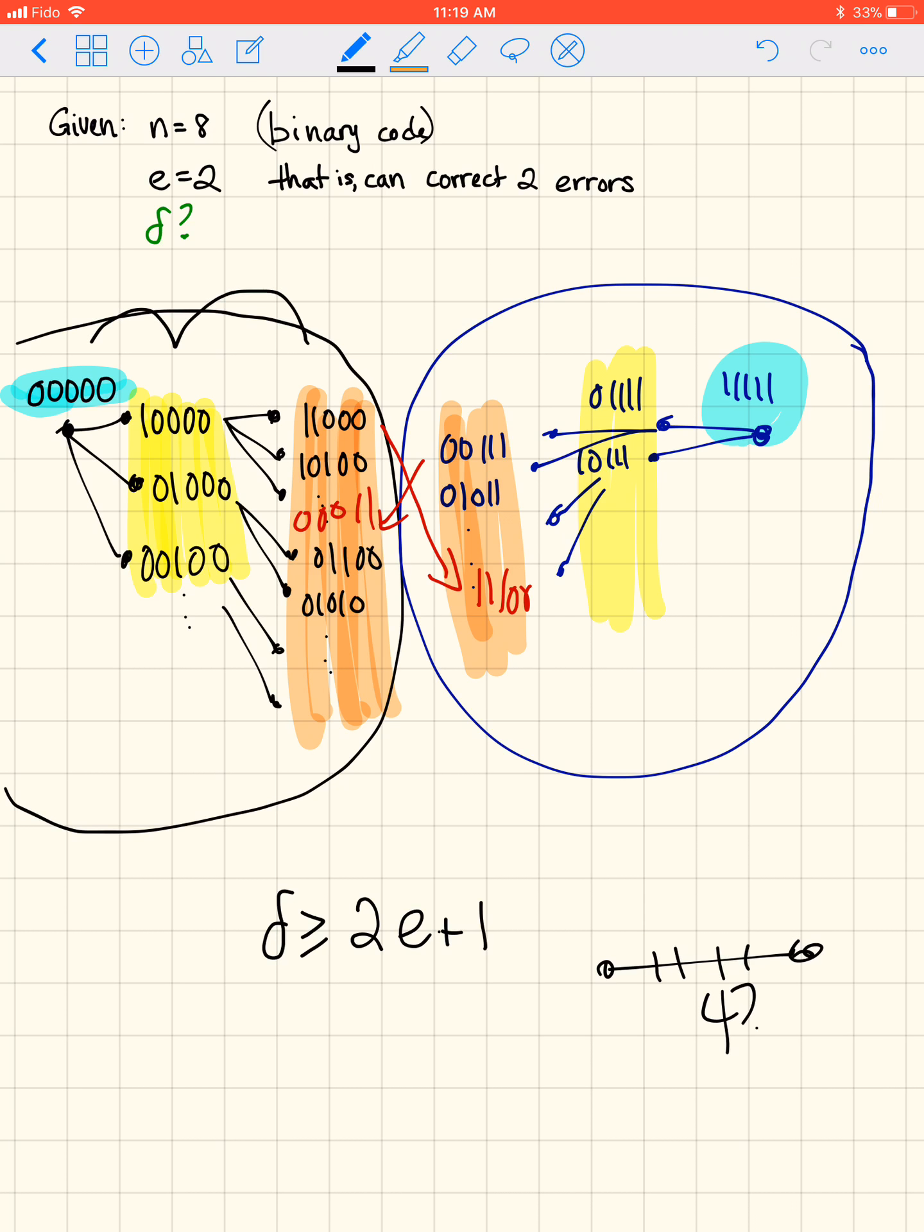Look at how many steps are required to correct 2 errors between the 5 zeros and the 5 ones. We need all 5 steps, because the 2 errors takes us this far, the 2 errors from the 1, 1, 1, 1, 1 takes us this far, and those sets have to be disjoint, so that means there are actually 5 steps. It's a fence post problem if you've ever heard of that. So that's why delta has to be greater than or equal to 2e plus 1.